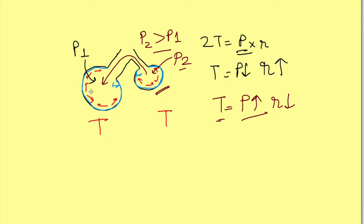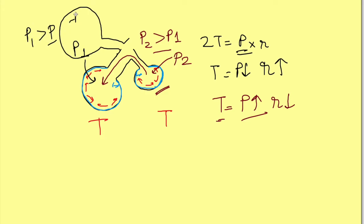This smaller alveolus may be connected to a bigger alveolus — and in that larger alveolus the pressure will be lesser. So air from it will also empty into an even larger alveolus. Because of this, all smaller alveoli will subsequently empty into larger and larger alveoli, thus forming a single large alveolus. But does the lung consist of only a single alveolus? No.